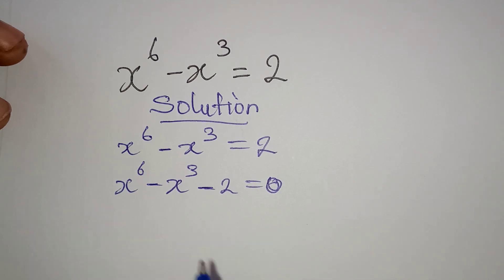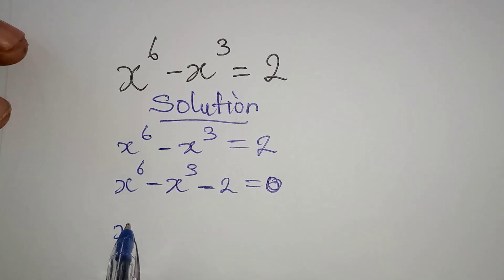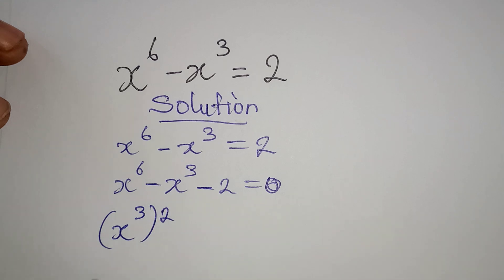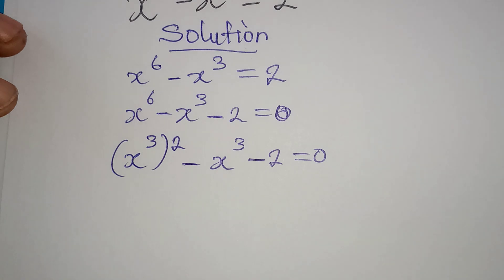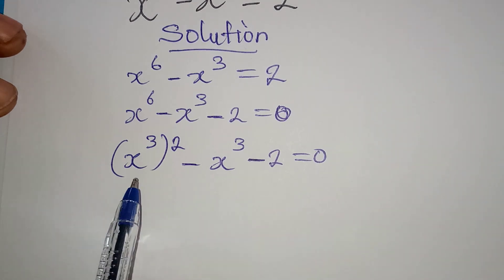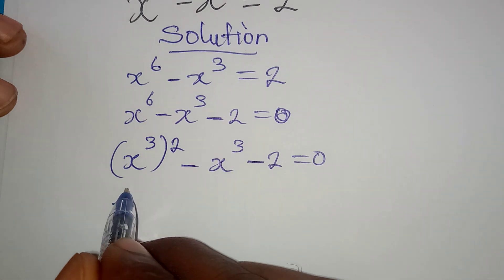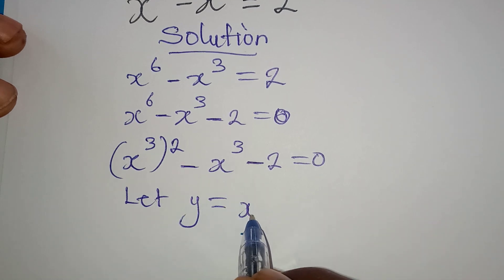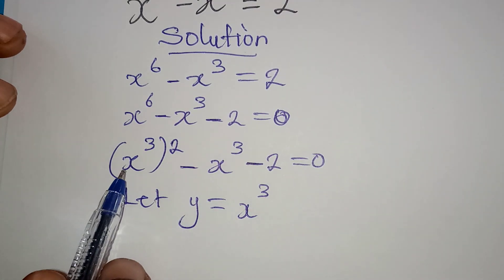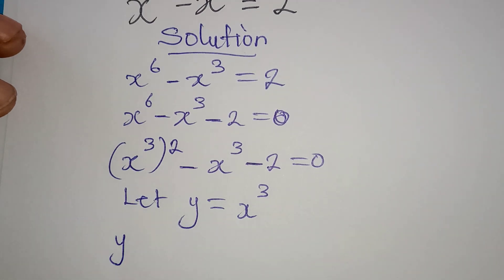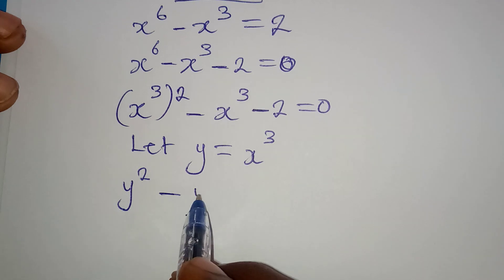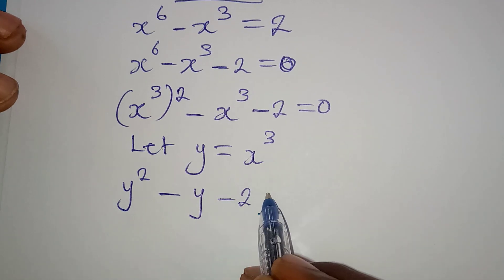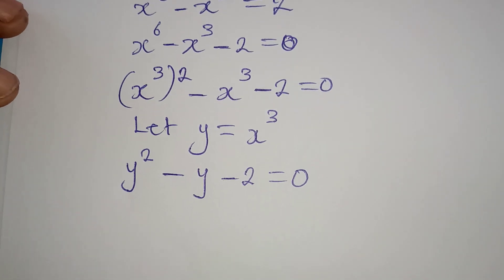Now I want to break this up. Remember x to the power of 6 is the same thing as x to the power of 3, to the power of 2. Then I have minus x to the power of 3, then minus 2, equal to 0. The next thing I'm going to do is let a letter represent x to the power of 3. So let y equal x to the power of 3. In place of x to the power of 3 I write y, square it because of the 2, minus y, minus 2, equal to 0.